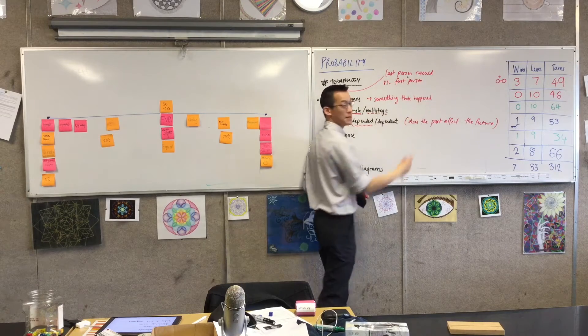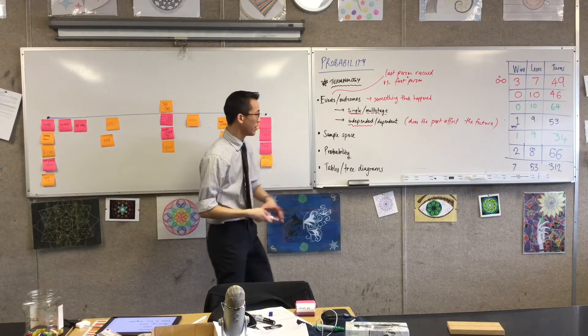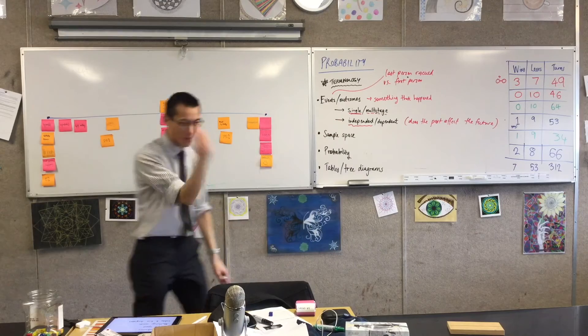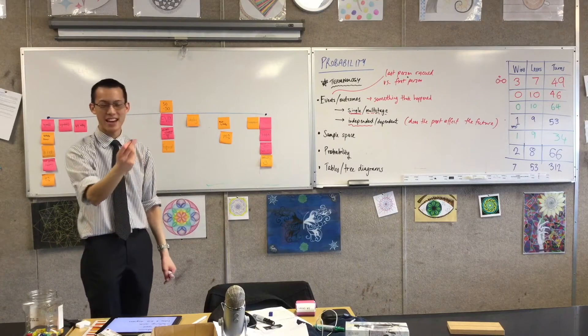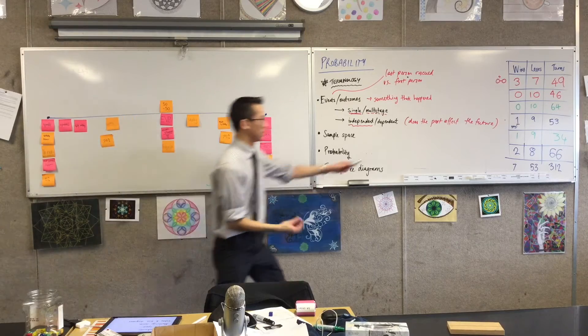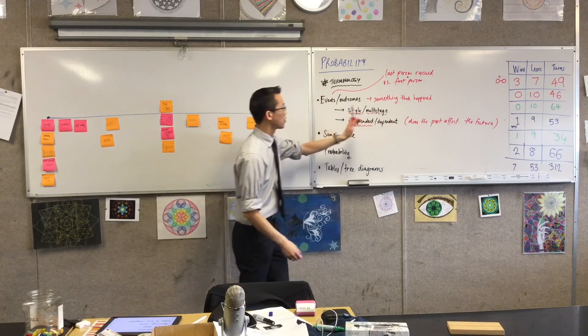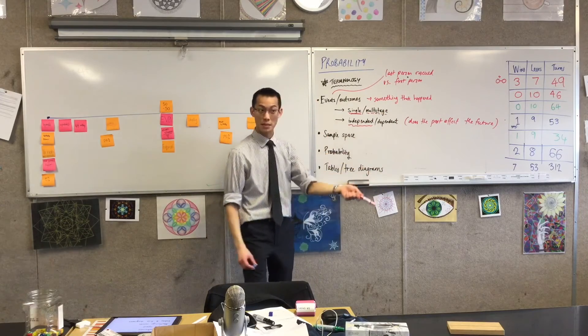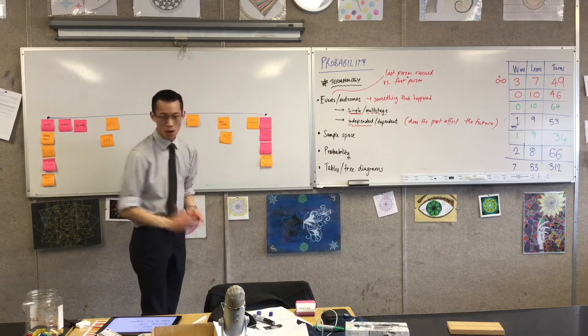It's dependent because the past - what you've rolled before - affects it. It's like "I'm just waiting for that three, that's the last one I need," and you keep on rolling ones and twos and fours and you're like "oh this is a pain," because of what's happened in the past. Depending on the way you describe an event, that will make it independent or dependent.